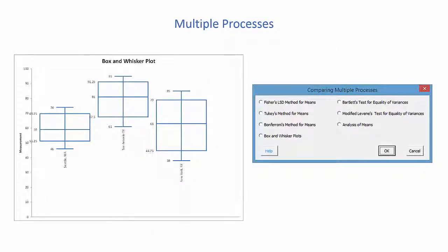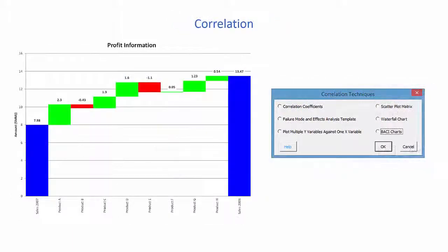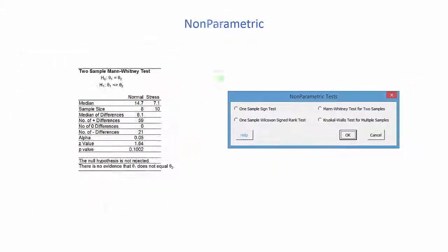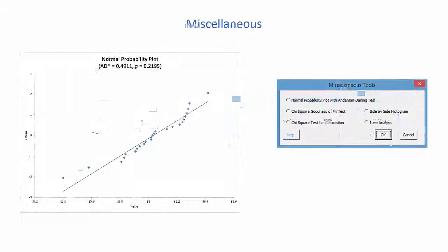Look at multiple processes using a box-whisker plot or an analysis of means or the correlation looking at waterfall plots or scatter plot matrices. We have four nonparametric techniques within the SPC for Excel process.